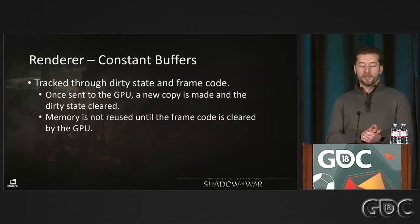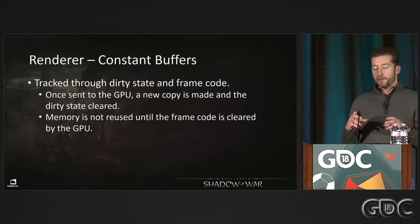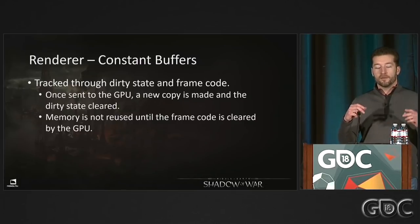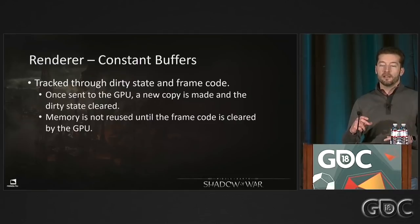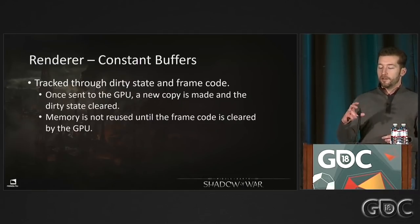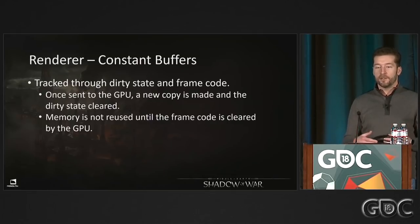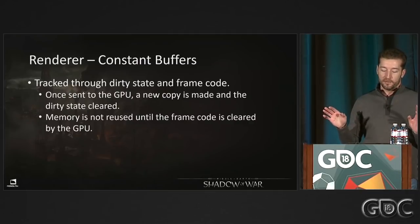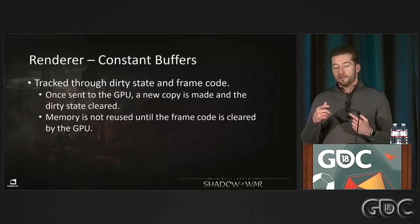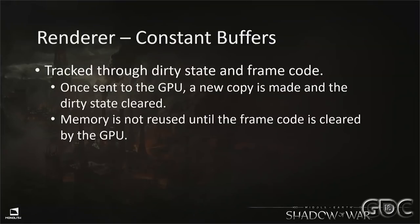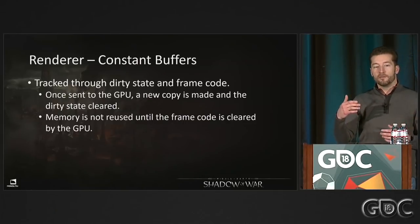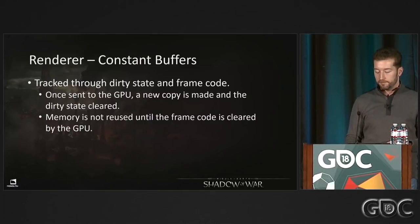We track all constant buffers with a dirty state in frame code. From the very beginning we're writing final platform-specific constant buffers, and when the game changes a value, it's marked dirty. On the first draw call that needs that constant buffer, we detect it's dirty and upload it to the GPU. We never touch it again until it's dirty again. For the frame constant buffer, it's dirty once per frame — set once at the very beginning and never again for any following draw call.